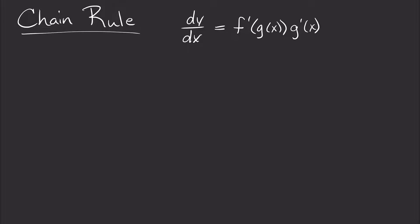In order to do this, you need to take the derivative of your outer function and then multiply it by the derivative of the inner function. So if we have a function that can be written as f of g, we take the derivative of f and multiply it by the derivative of g. The first term is the derivative of the outer function, and then we multiply it by the derivative of the inner function.